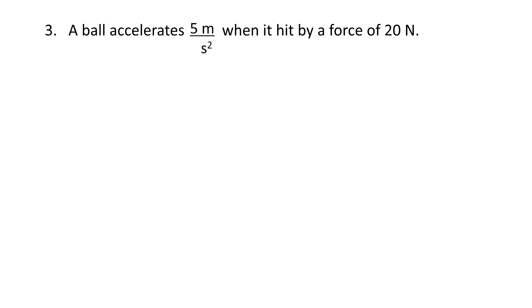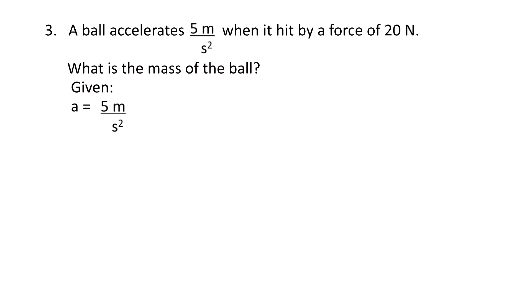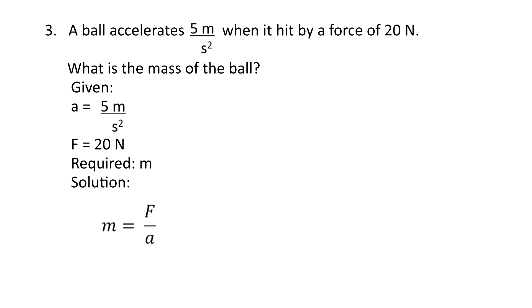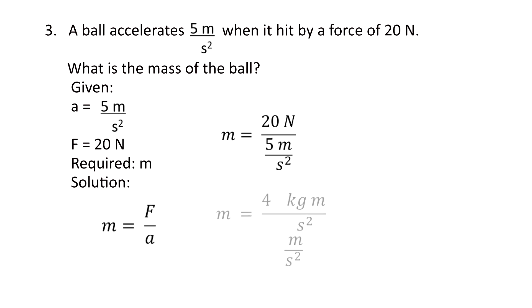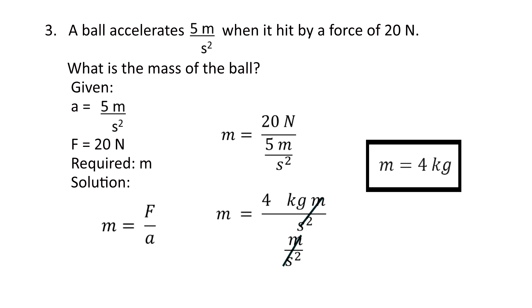For number 3, a ball accelerates at 5 meters per second squared when hit by a force of 20 Newtons. What is the mass of the ball? The given: acceleration equals 5 m/s², force equals 20 Newtons. The equation for mass is: mass equals force over acceleration. Substituting: 20 Newtons divided by 5 m/s² equals 4. Since Newton divided by m/s² leaves kilograms, the mass equals 4 kilograms.